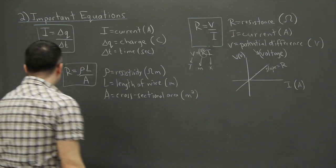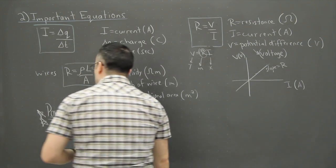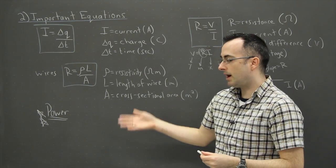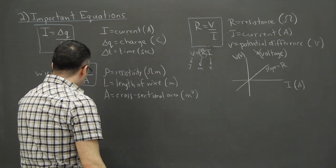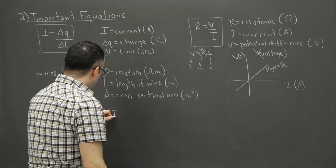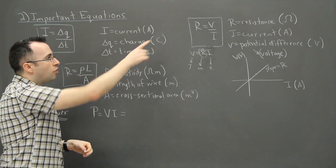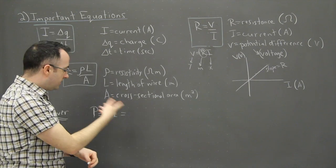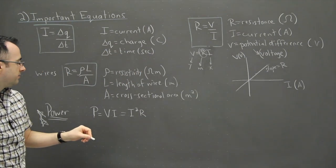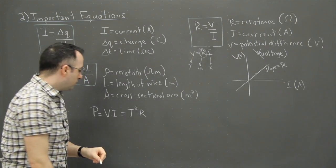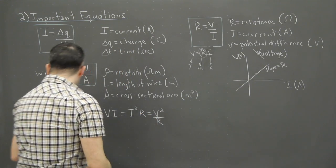A more important equation is power — this comes up a lot on exams. We still use capital P, and for electrical power, P equals V times I — potential difference times current. You can also substitute using Ohm's Law: replacing V gives P equals I squared R, or replacing I gives P equals V squared over R. All three forms are on your data booklet.